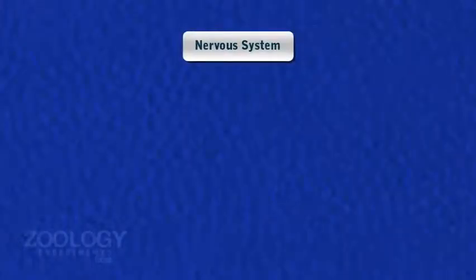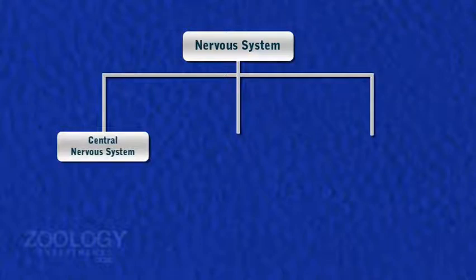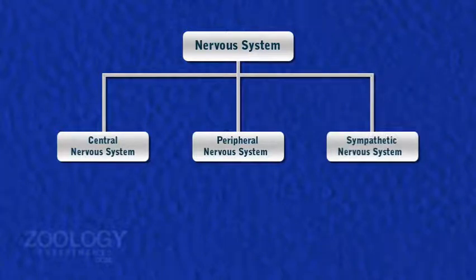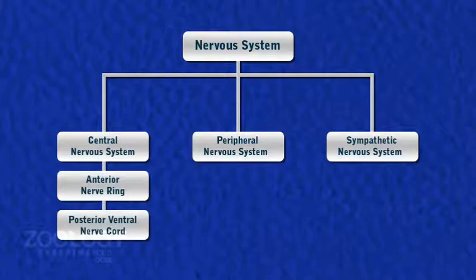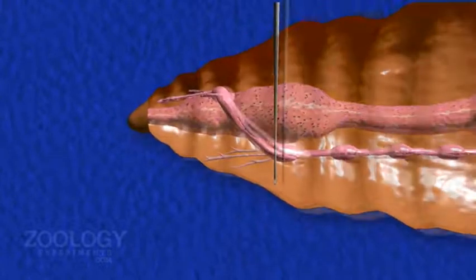The nervous system is well developed and concentrated. It consists of three parts: 1. Central Nervous System, 2. Peripheral Nervous System, 3. Sympathetic Nervous System. The Central Nervous System consists of a Nerve Ring and a Ventral Nerve Cord.